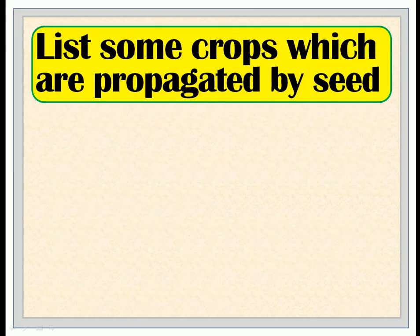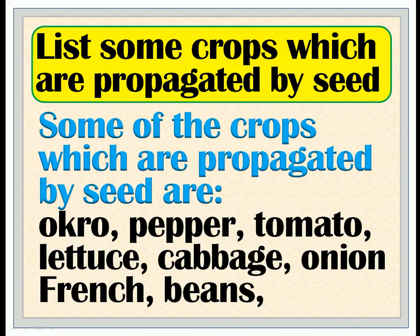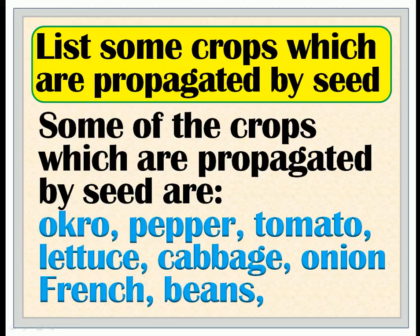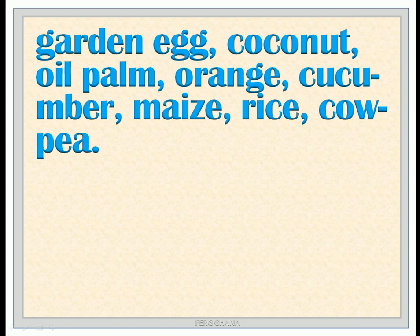List some crops which are propagated by seed. Some of the crops propagated by seed are: okro, pepper, tomato, lettuce, cabbage, onion, French beans, garden egg, coconut, oil palm, orange, cucumber, maize, rice, cowpea.